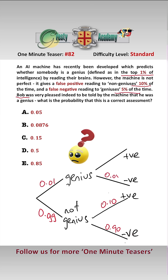which means that you are incorrectly told 0.05 probability that you're not a genius if you are, and 0.95 probability that you are.